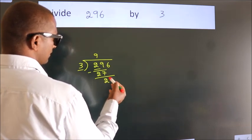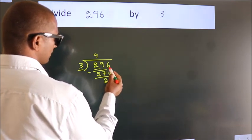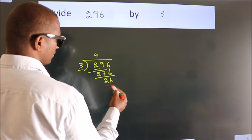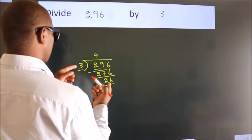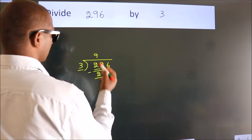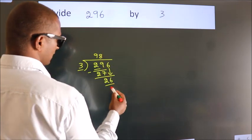After this, bring down the beside number. So, 6 down. So, 26. A number close to 26 in the 3 table is 3 eights, 24.